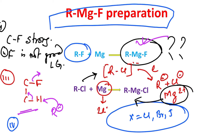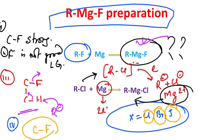Most importantly, the source of RF is also problematic. In medicinal chemistry we need many C–F bonds, but forming the C–F bond is difficult because fluorine is very reactive. Unlike other halogens like chlorine, bromine, and iodine, we can't follow a simple strategy to prepare a C–F bond.